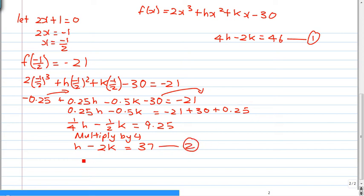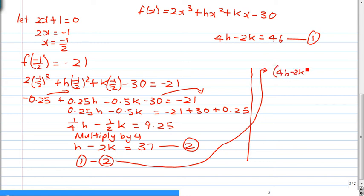So what I can do now is take equation 1 minus equation 2. Equation 1 minus 2. So equation 1 would be 4h minus 2k. The reason why I'm deducting equation 2 is because I want to eliminate 2k minus h minus 2k equals to 46 minus 37. 46 from equation 1 minus 37 from equation 2.